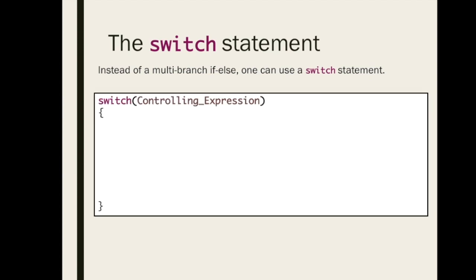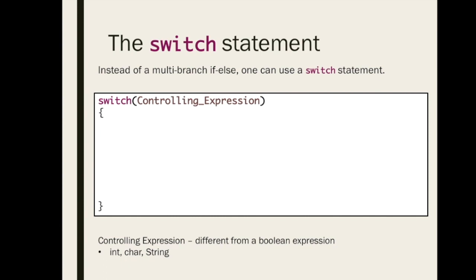We begin by using the keyword switch, followed by a set of parentheses that contains a controlling expression. This controlling expression is different from a Boolean expression — we're not trying to put something that evaluates to true or false inside these parentheses. We have a very limited number of things we could put in there: an int or anything that evaluates to an int, a char, or a string variable.